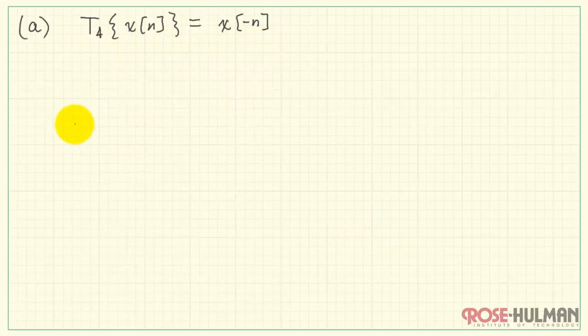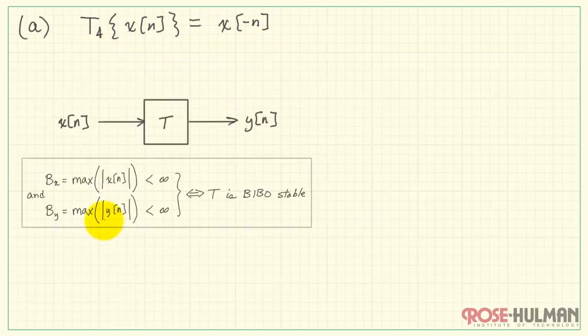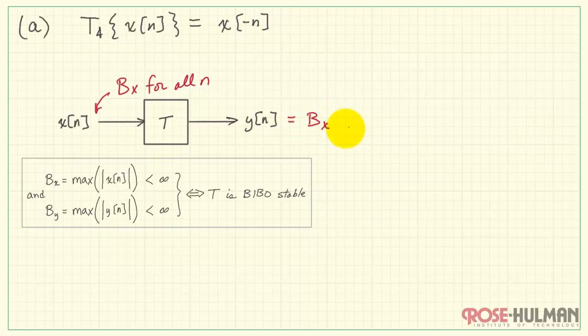Our system T4 is X of minus N. Let's begin with our generic proof structure. I'm going to apply the bound on the input X, that is BX. I'll apply that for all possible N.